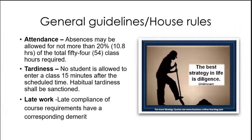For your general guidelines or house rules: for attendance, absences may be allowed but you need to let me know prior to your absence, and it's allowed for not more than 20% of the total required class hours. No student is allowed to enter class 15 minutes after the scheduled Zoom meeting time. For late compliance, requirements have a corresponding demerit — 20% less than the full grade you should have.